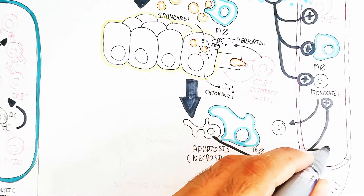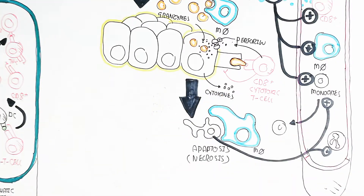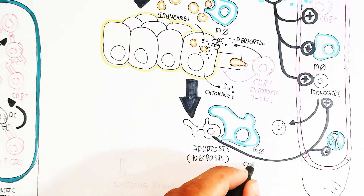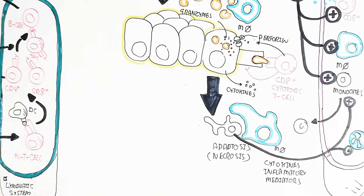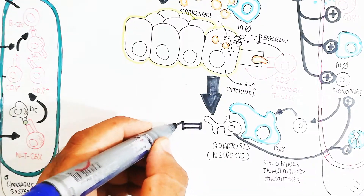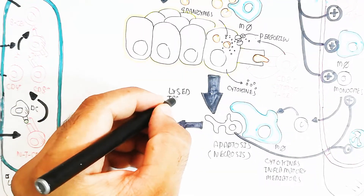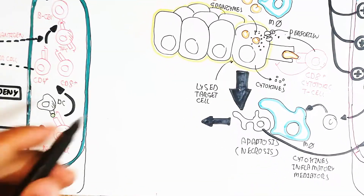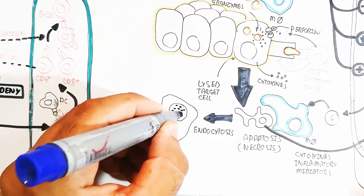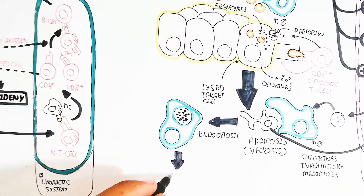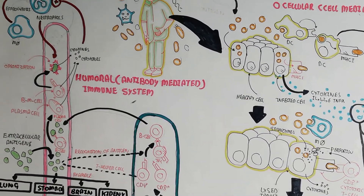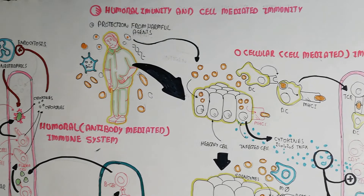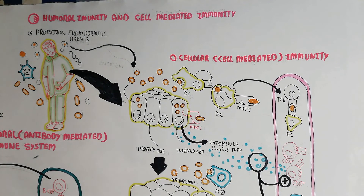The killing of the infected cell leads to apoptosis and necrosis, as the CD8 cytotoxic T cell releases granzyme into the cell. Inflammatory mediators and cytokines produced after necrosis recruit neutrophils and macrophages to engulf the dead cellular content. This endocytosis leads to destruction by hydrolysis through the macrophage. That was a quick overview of humoral and cell-mediated immunity.